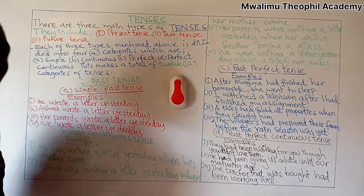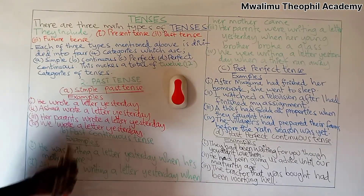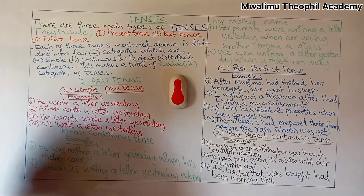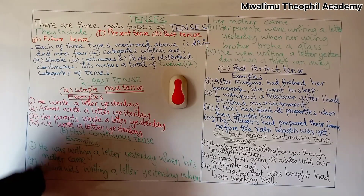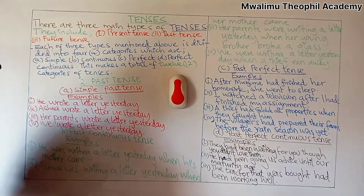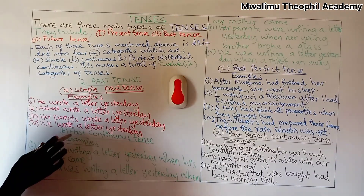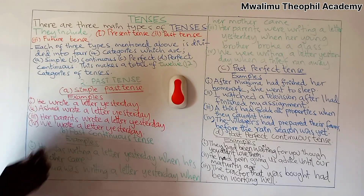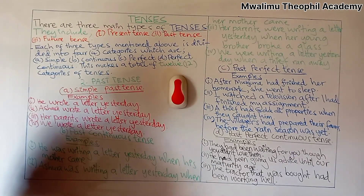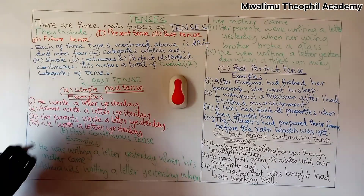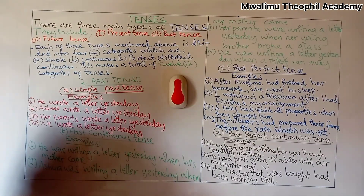Now, after we have seen examples of sentences which are in simple past tense, let us shift to our second category, which is past continuous tense. These are examples of sentences which are in past continuous tense.